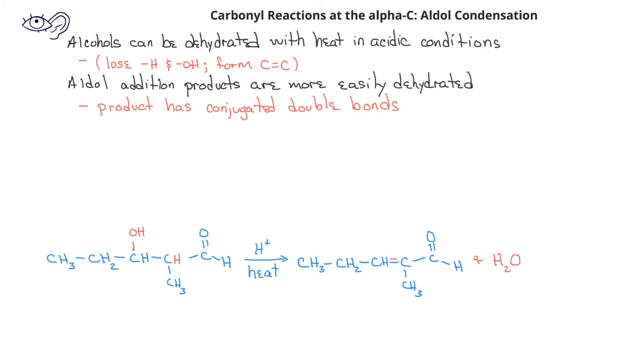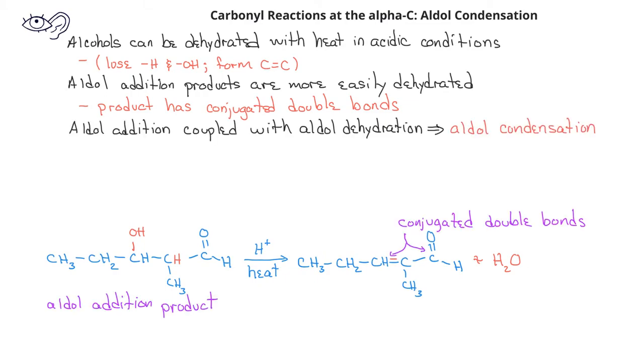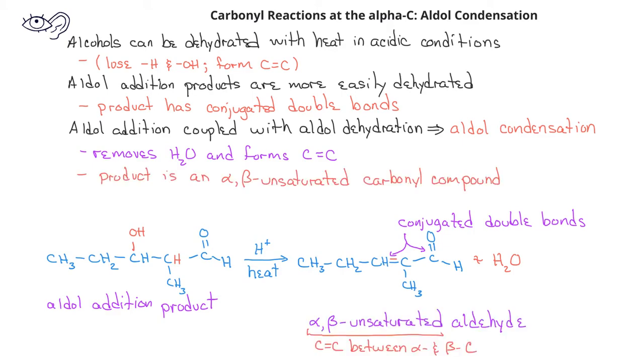When we have these two processes in one combined step, the aldol addition followed by dehydration, we refer to this as an aldol condensation, which removes a small molecule, a hydrogen and a hydroxyl group, and it forms a new carbon-carbon double bond. The result is what's known as an alpha-beta unsaturated aldehyde.